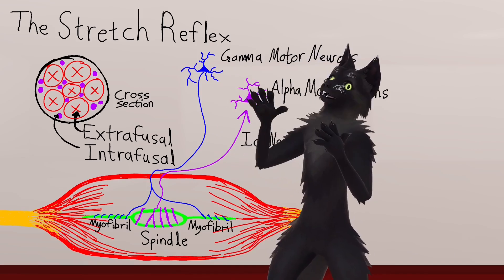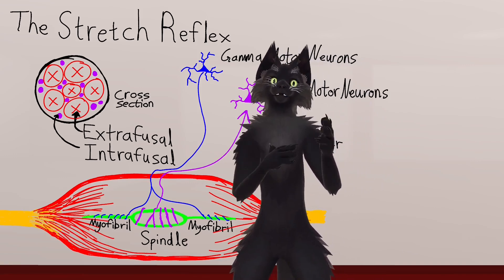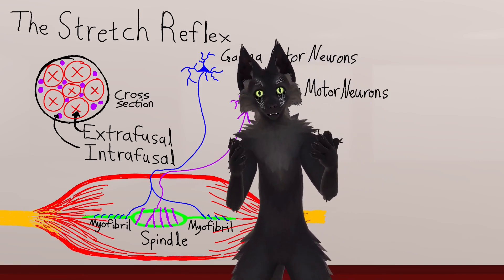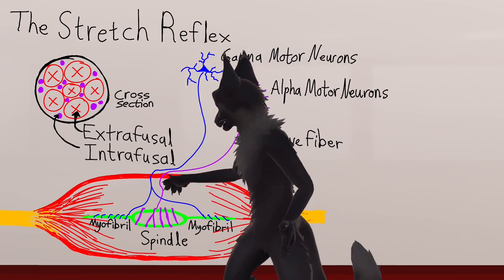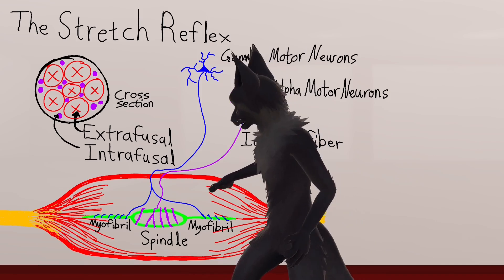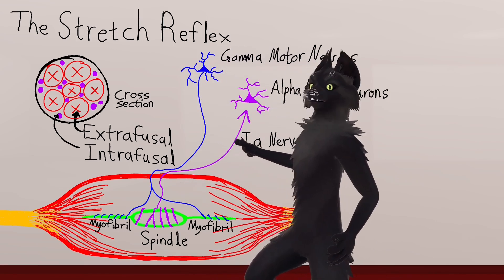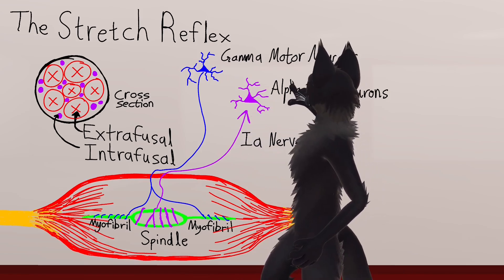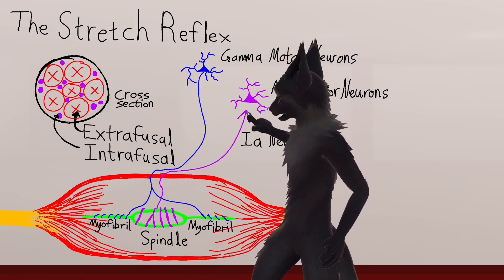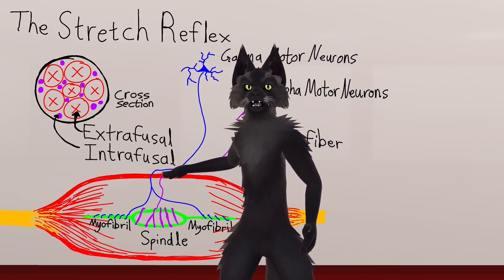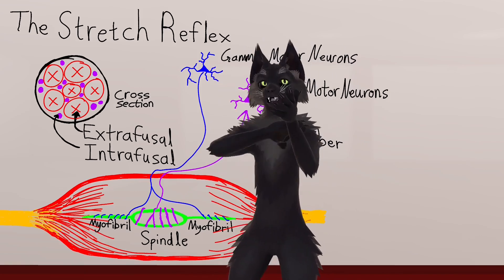Whenever the spindle gets longer, the 1a sensory nerve fiber activates, emitting action potentials in proportion to the increase in length of the spindle. The stretch reflex is the natural tendency of your muscles to resist being stretched. When someone pushes on your arm, they pull the whole muscle apart and the spindle gets pulled apart as well, which causes the 1a sensory nerve fibers to activate. They activate the alpha motor neurons, which increases the amount of force in the extrafusal muscle fibers, causing you to resist the force being applied.